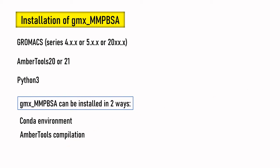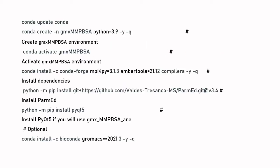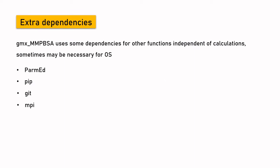Using the conda environment, you can install different versions of MMPBSA in isolated environments, reducing incompatibility with other packages. It does not require compilation of AmberTools or GROMACS, which is a key advantage. The command lines to install this program using conda are available on the GMX MMPBSA homepage, where you can copy and run them. Sometimes you may need some extra dependencies to install this package.